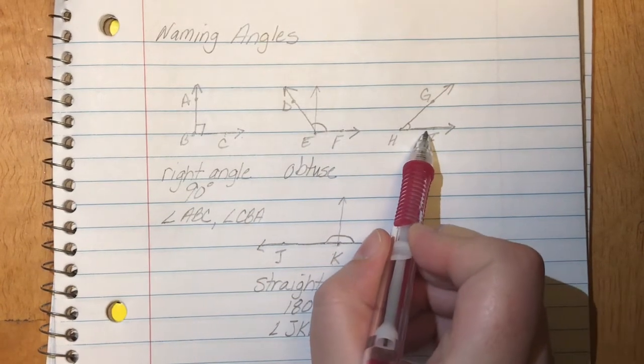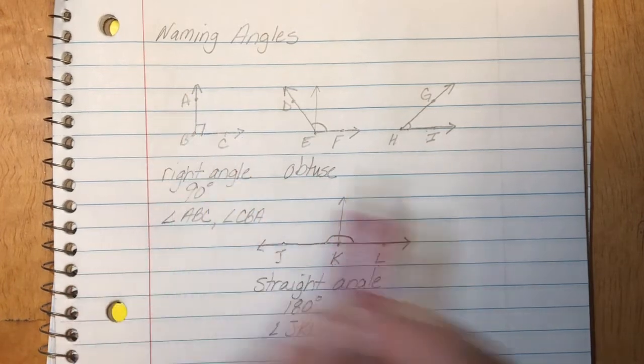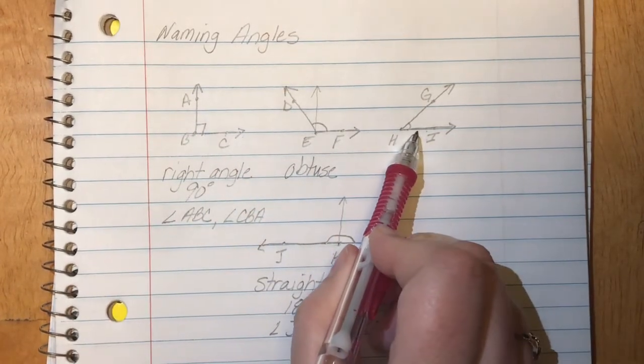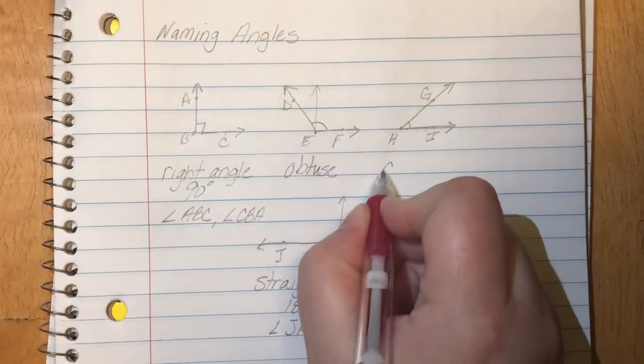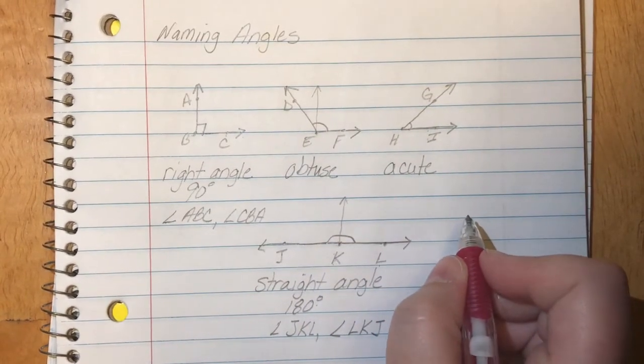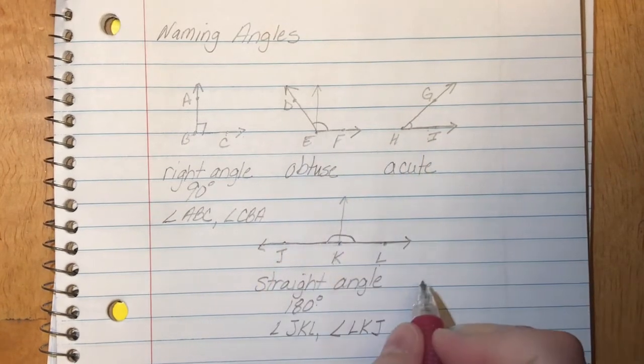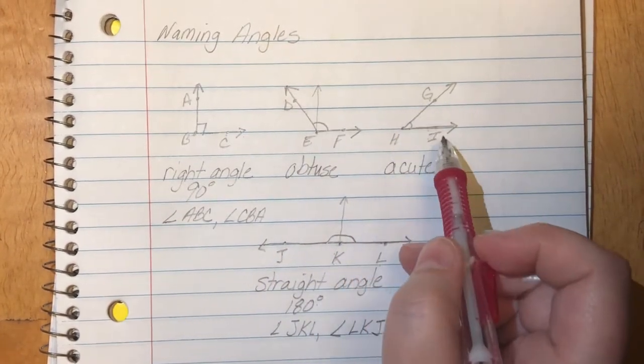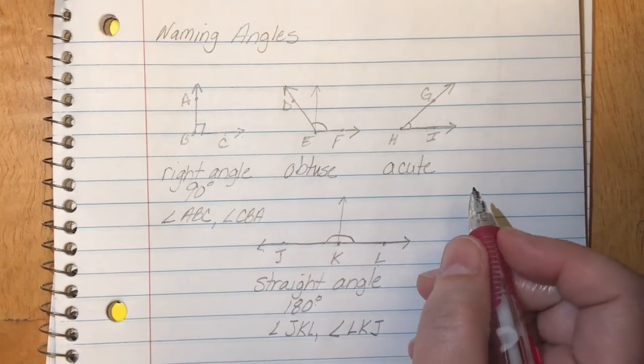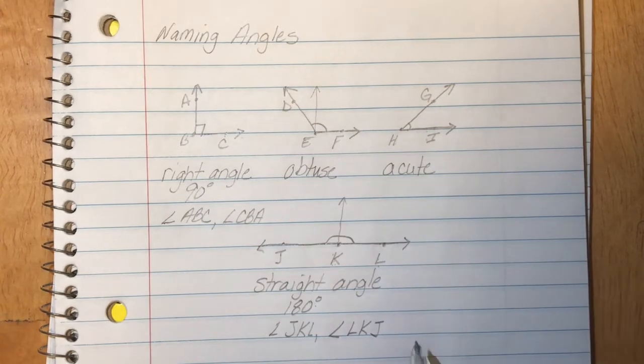But what happens if it's smaller than 90 degrees or if it's smaller than that right angle? For example this one. We call these acute angles. It's a cute little angle because it's smaller than the 90 degree angle. So this angle may be something like 60 degrees or 40 degrees. They're much smaller than a 90 degree angle.